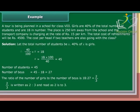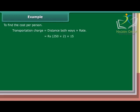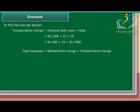2 upon 3 is written as 2 upon 3 and read as 2 is to 3. To find the cost per person: transportation charge equals distance both ways into rate, which equals Rs. 250 into 2 into 15, which equals Rs. 500 into 15, which is equal to Rs. 7,500. Total expenses equals refreshment charge plus transportation charge, which is Rs. 4,500 plus Rs. 7,500, which equals Rs. 12,000.